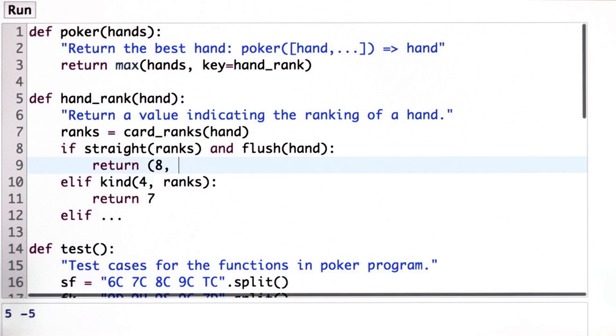But then the next element of the tuple serves to break ties. If 8 is the highest compared to any other hand, then that's the winner. But if there are multiple hands that have an 8, they all tie, and we have to go on to the first tiebreaker.